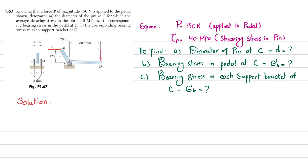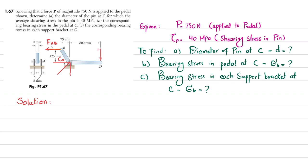Let's start with the solution. Due to this load, there is definitely a reaction force. Let this be F_AB. At point C, this force causes a reaction force in this direction — that is the resultant. I will represent C like this. You can also draw its two components: one is C_x and another is C_y. This is the resultant.